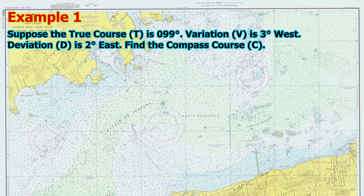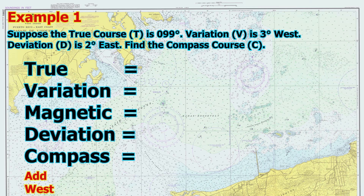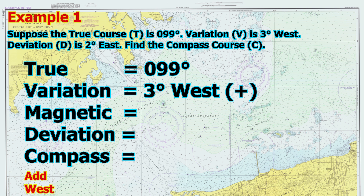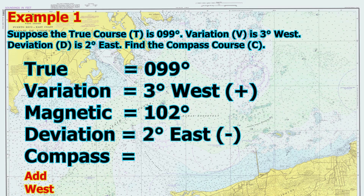Section 3: Sample Calculation. Example 1: Suppose the true course is 099 degrees, the variation is 3 degrees west, and the deviation is 2 degrees east. We need to find the compass course. Step 1 — Apply variation: True 099 degrees plus 3 degrees west equals Magnetic 102 degrees. Step 2 — Apply deviation: Magnetic 102 degrees minus 2 degrees east equals Compass 100 degrees.